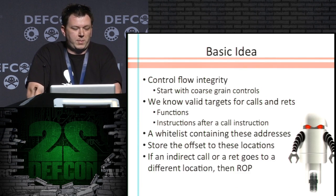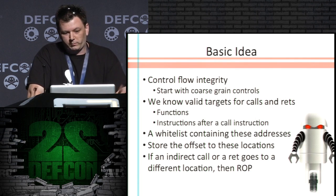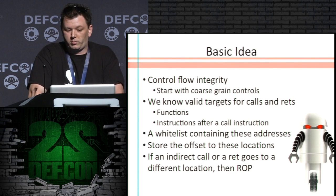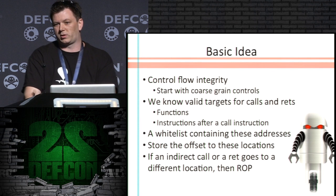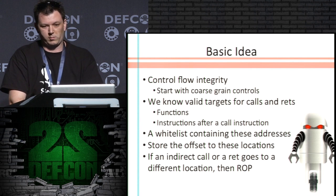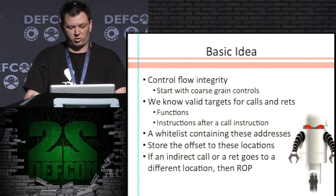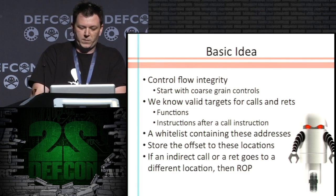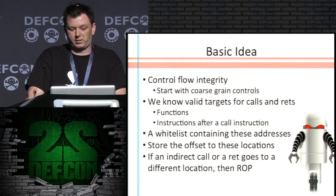The basic idea here is we're going to enforce some control flow integrity. We're starting with just coarse-grain controls. The idea is we know where your calls and returns are supposed to go — the functions, instructions after call instructions, things like that. So we want to create a whitelist of these addresses.